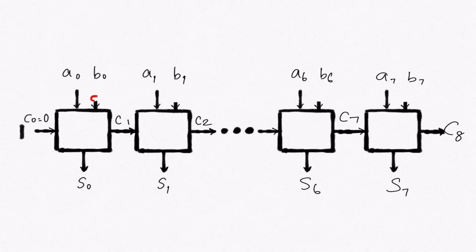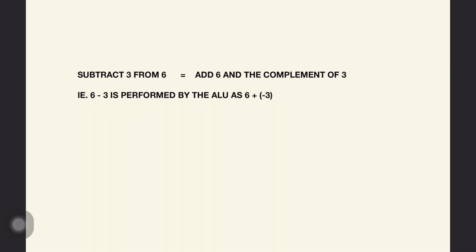A subtractor works similarly by modifying each full adder in the parallel adder cascade to include an inverter to one of the inputs. It includes an inverter that changes the sign of one of the numbers before it adds them together. So essentially, the ALU will perform the instruction subtract 3 from 6 as addition of 6 and the complement of 3. Complement meaning the inverse.